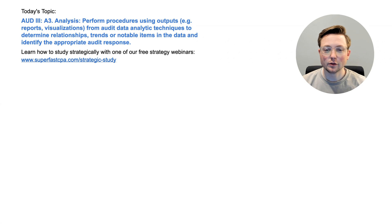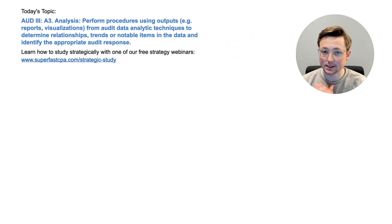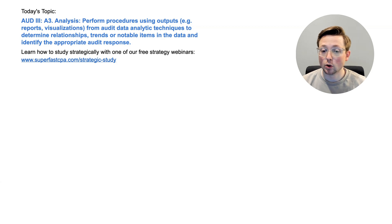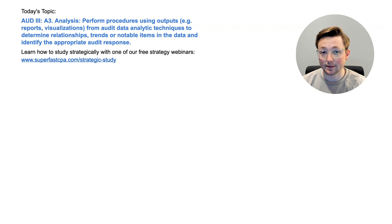Welcome to another audit walkthrough video from SuperfastCPA. I'm Logan, and in today's video, we're going to be going over audit area 3, section A3. This is an analysis topic: perform procedures using outputs such as reports and visualizations from audit data analytic techniques to determine relationships, trends, or notable items in the data and identify the appropriate audit response. We're going to be doing that the SuperfastCPA way, which is diving straight into the questions to learn the material.